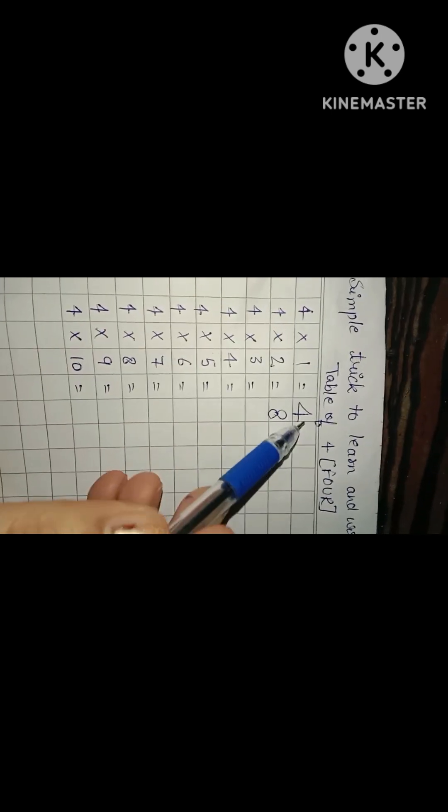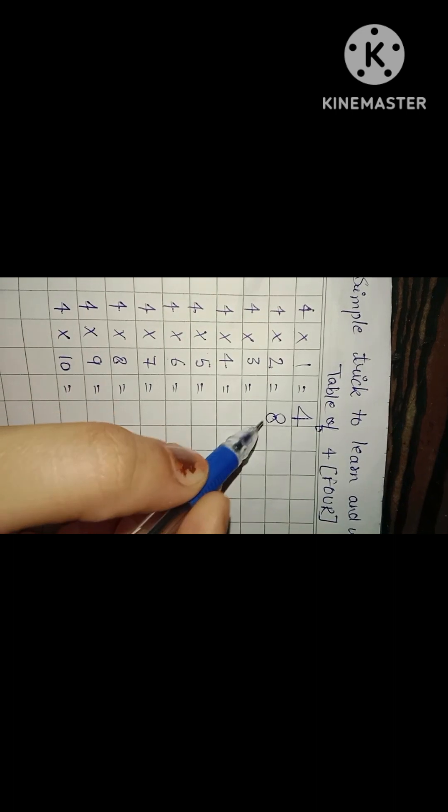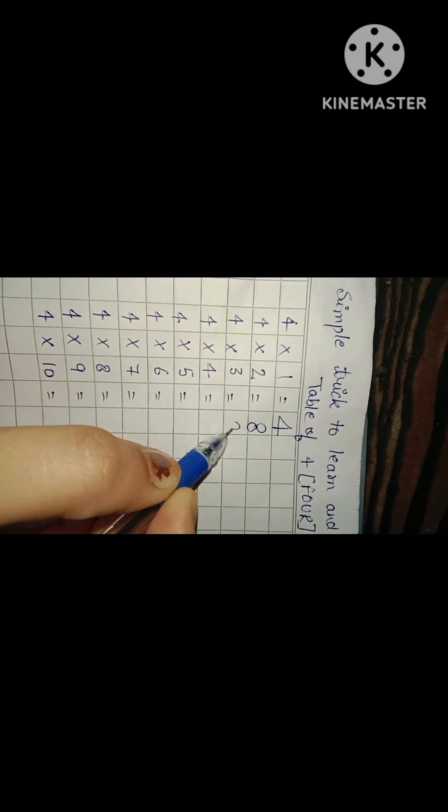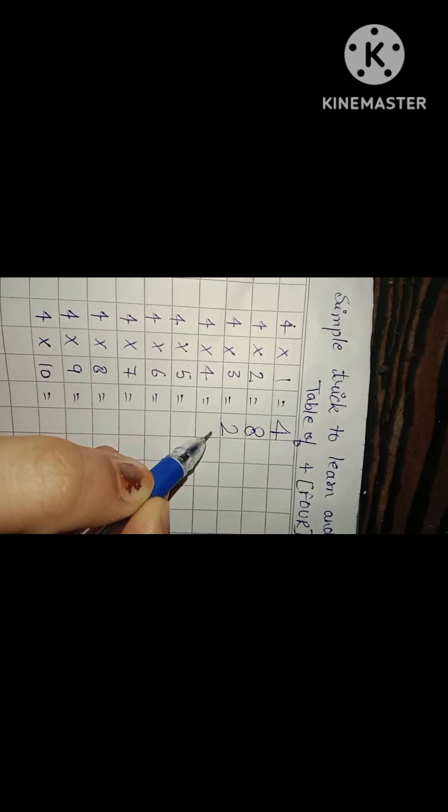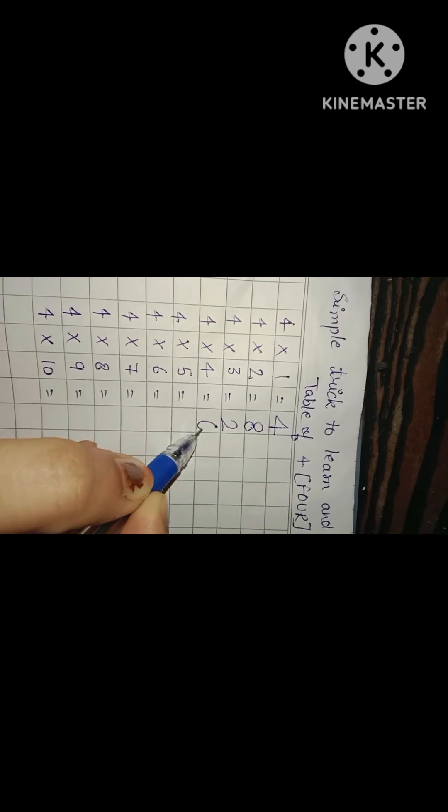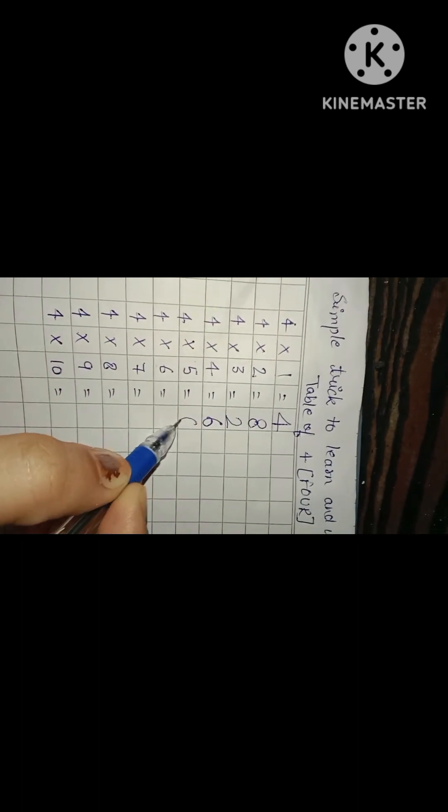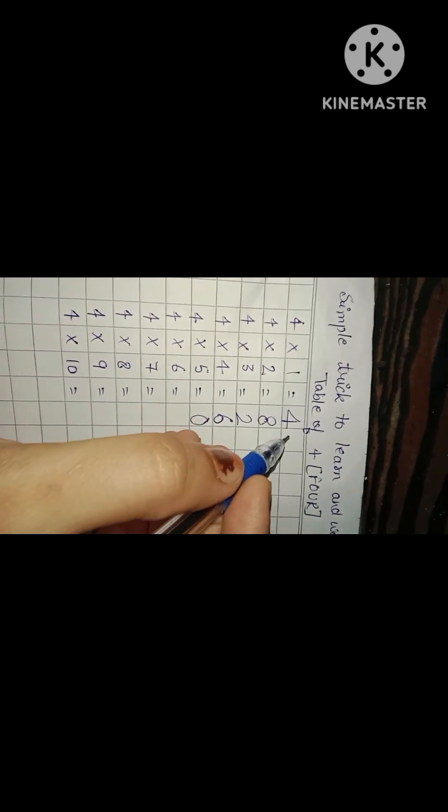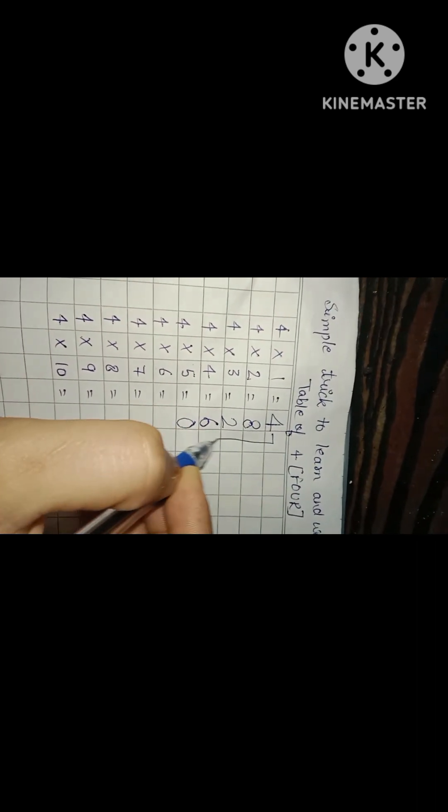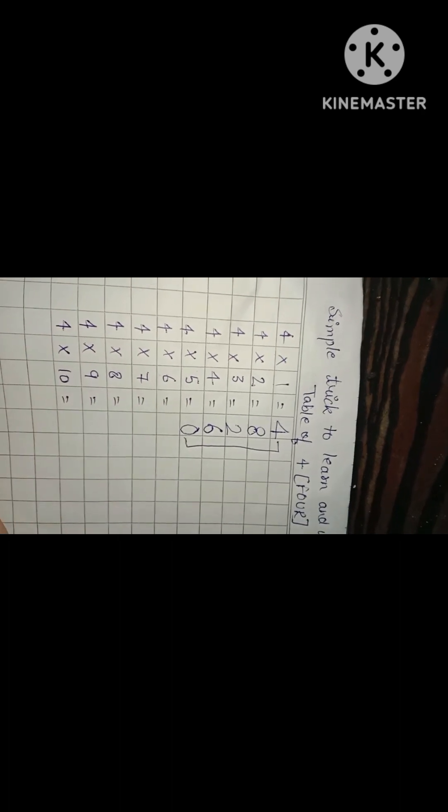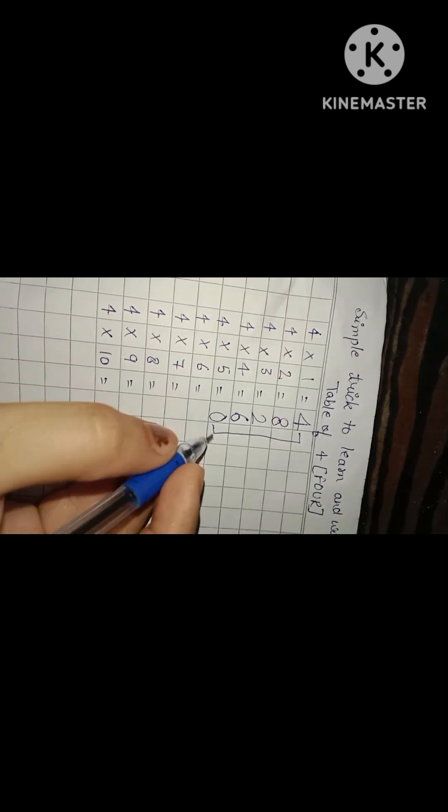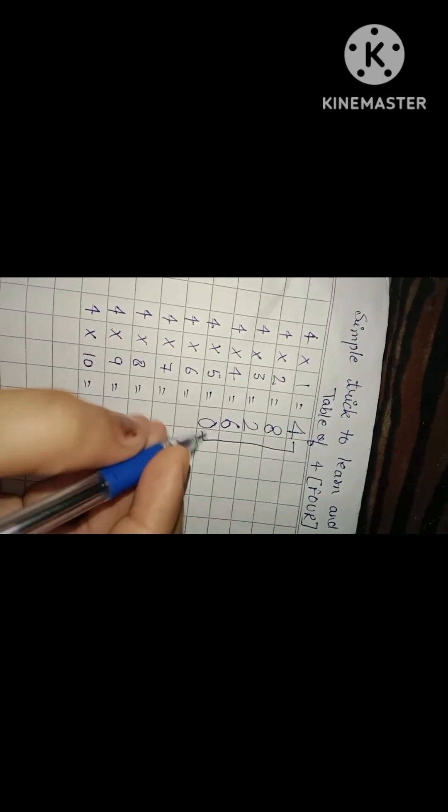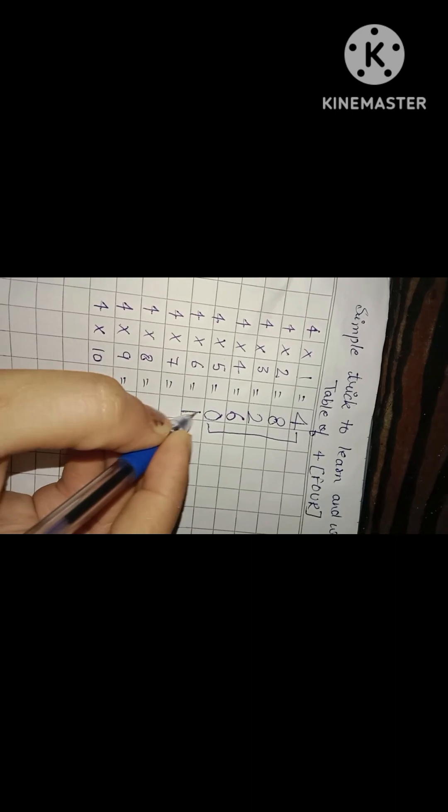Then we will write 2, then we will write 6, then write 0. Four, eight, two, six, zero - these five numbers you have to learn, and again we have to repeat these five numbers. It is very easy, it is very simple. Again write 4, then 8, then 2, then 6, then 0.